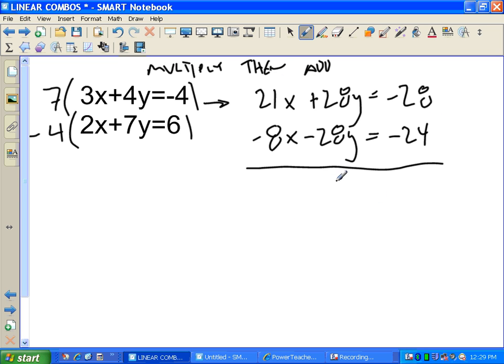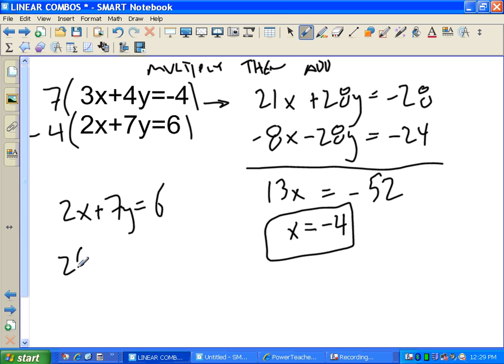I end up here with 8x, negative 8x even, minus 28y. That's good. Equals negative 24. Multiply, then add. We did the multiply part. Now we add. 21 minus 8 is 13x. This is all negative 52. 52 divided by 13, negative 4. Okay? And y equals, let's go with this equation. We could use one of these, but let's go with easy, simple. 2x plus 7y equals 6. 2 times negative 4 plus 7y equals 6. I'm going to add 8 to both sides. 7y equals 14. Y equals 2.